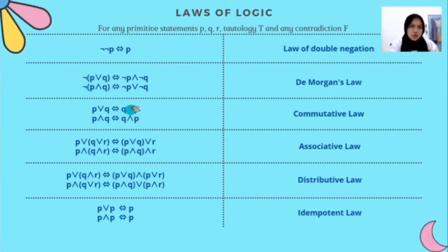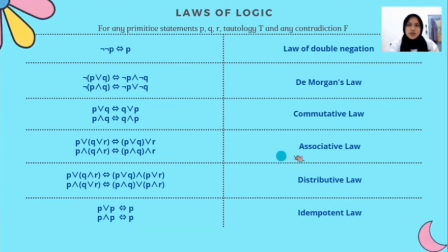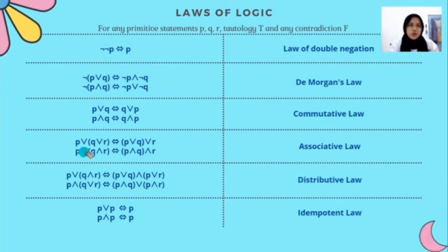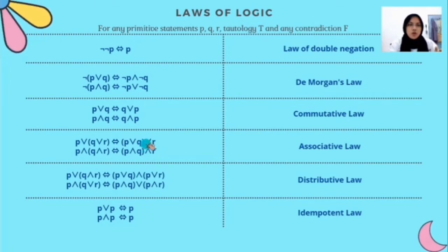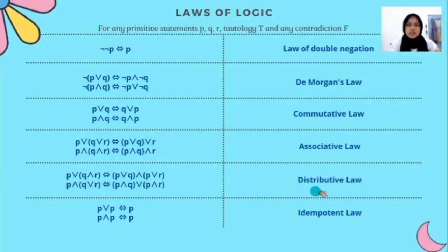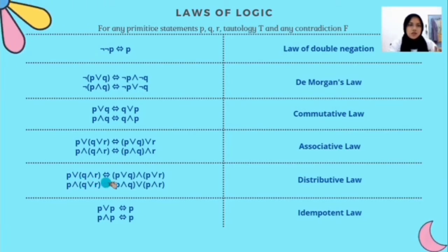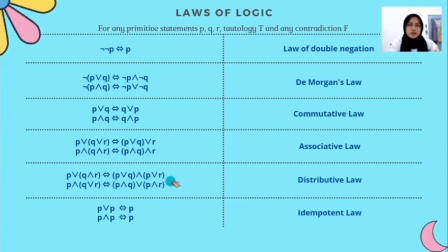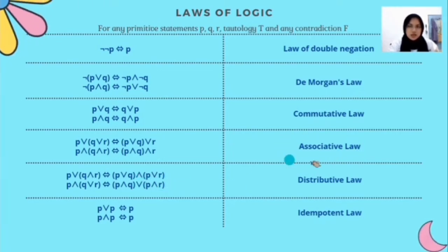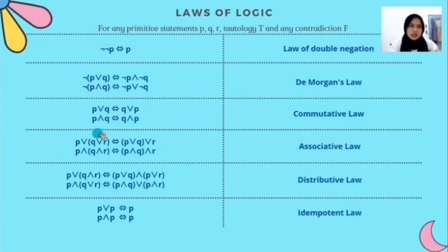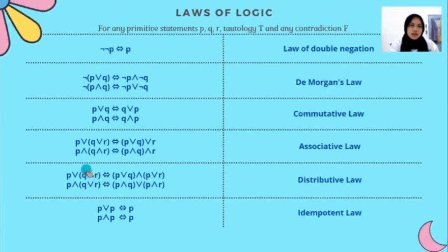Next is associative law. For example, P ∨ (Q ∨ R) is equivalent to (P ∨ Q) ∨ R. Next is distributive law. For example, P ∨ (Q ∧ R) is equivalent to (P ∨ Q) ∧ (P ∨ R). Associative law is used when the statement has the same symbol throughout, and distributive law is used when there are different symbols in a statement.